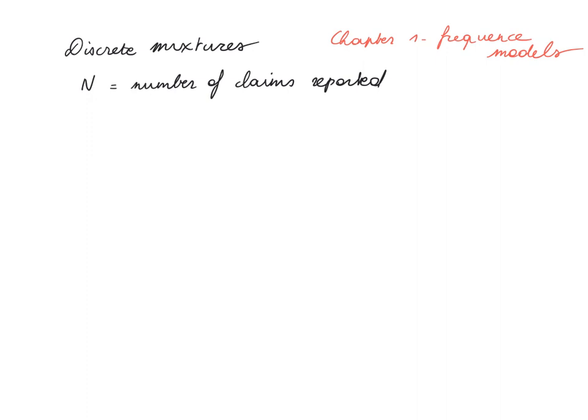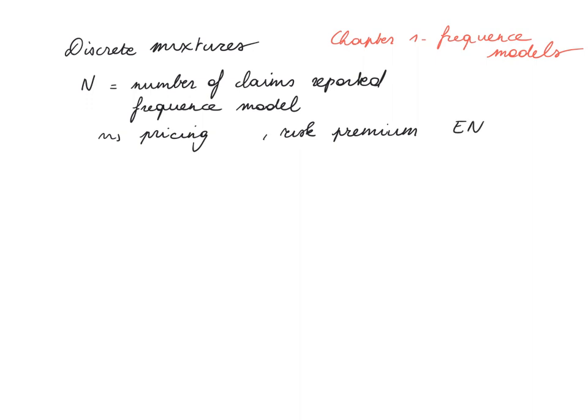We're looking at the number of claims reported — a frequency model. The relevance of building such models in insurance risk modeling could be, for instance, that you want to use this expected number of claims in a pricing model. The risk premium is put together as the expected number of claims multiplied with the expected claim severity.